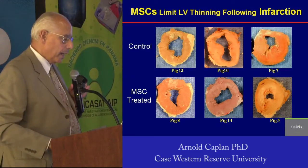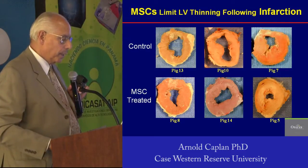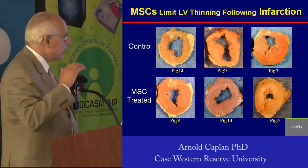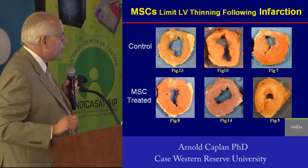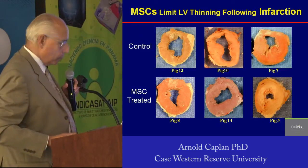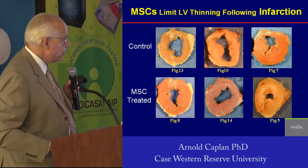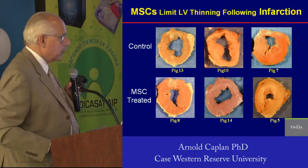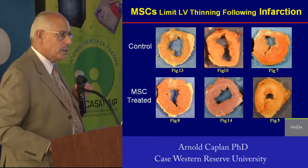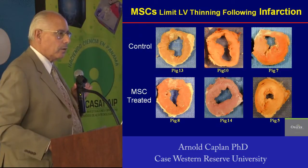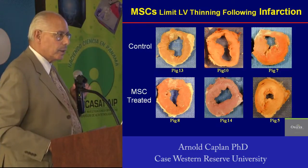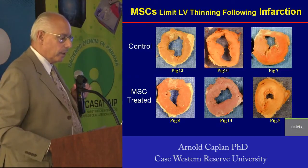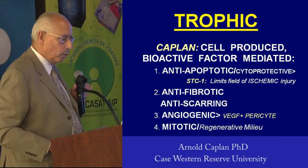You can see the bright red cells at that site. So let's go back to the Osiris pigs. On the top, these were given control injections, and so they have hypertrophy and scarring. The pigs that were given MSCs — their echocardiograms and their heart morphology are totally normal.